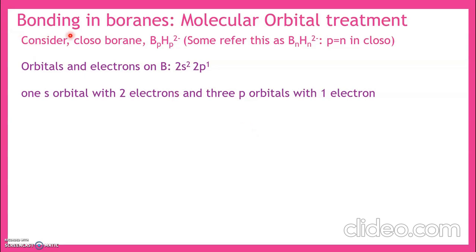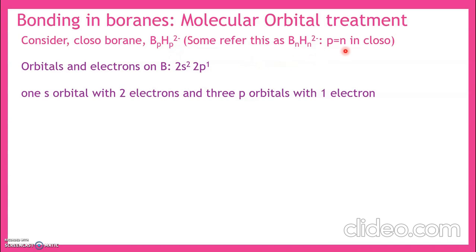We will learn about bonding in boranes based on the molecular orbital treatment. Consider closo borane B_p H_p^(2-). Some books or websites refer to this as B_n H_n^(2-). Throughout this course, n is the number of corners present in the parent polyhedron. For the closo case, p is equal to n, so we retain this as B_n H_n^(2-) or B_p H_p^(2-); both are the same for closo, but not for all.